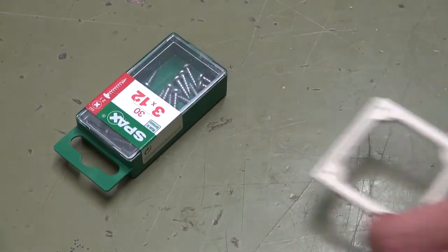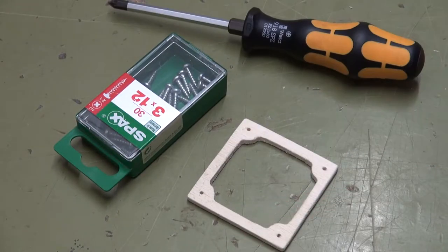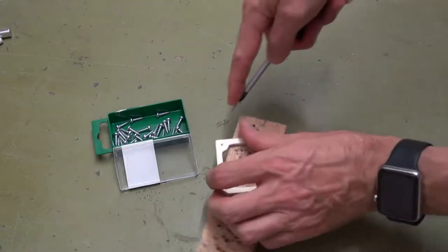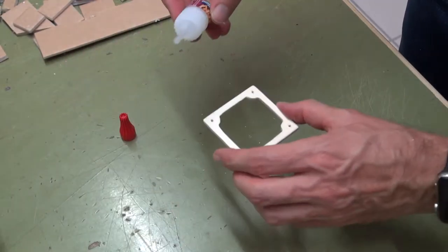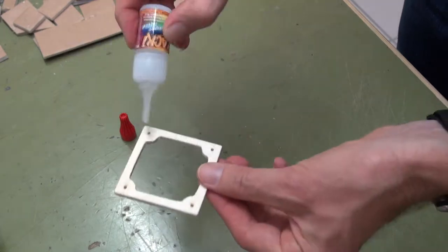Next, we need some 3x12mm universal pan head screws. Screw in and out once for each of the four holes. Then add some CA glue to harden the threads.